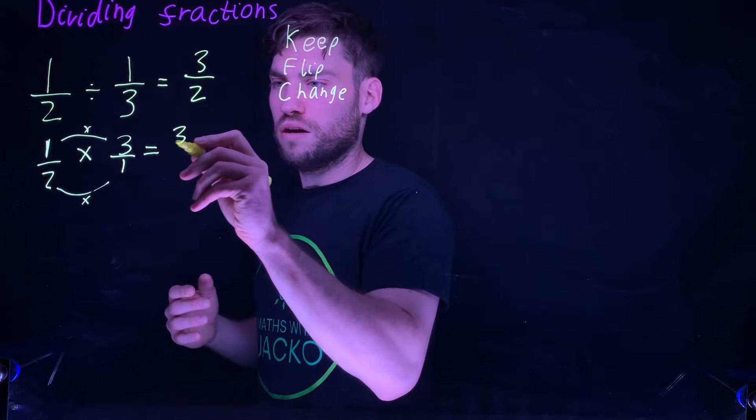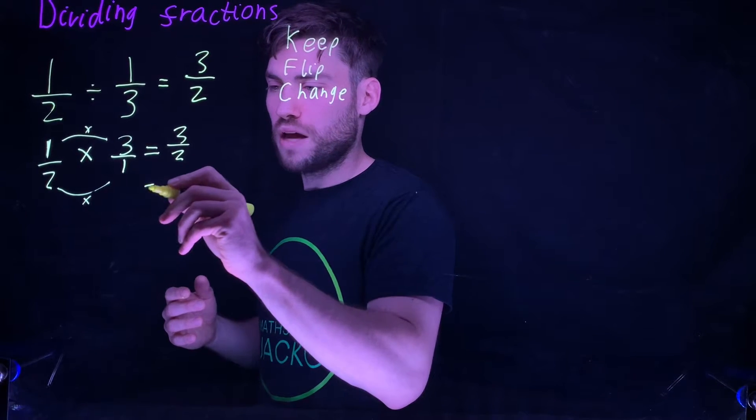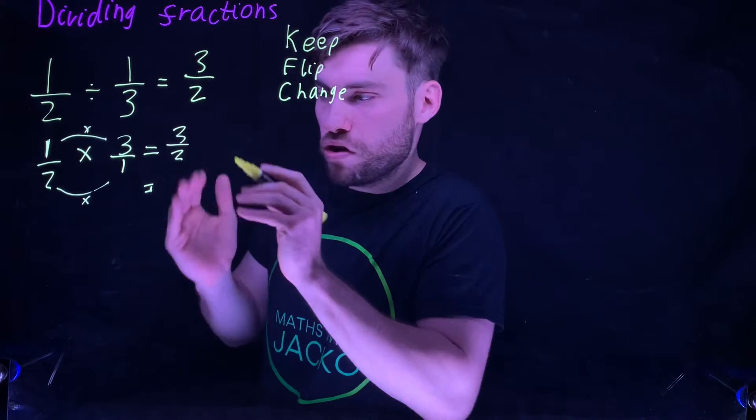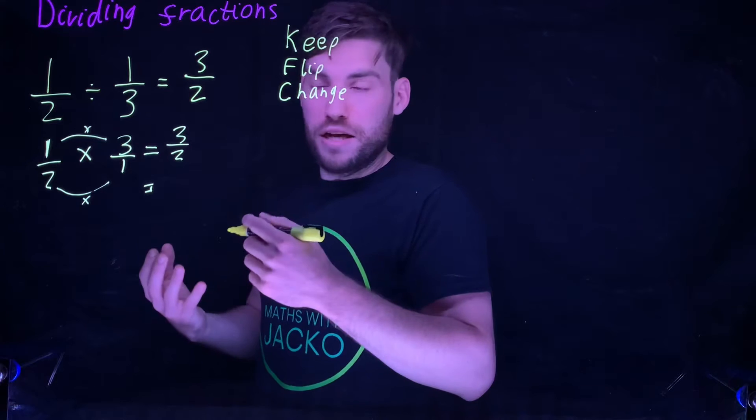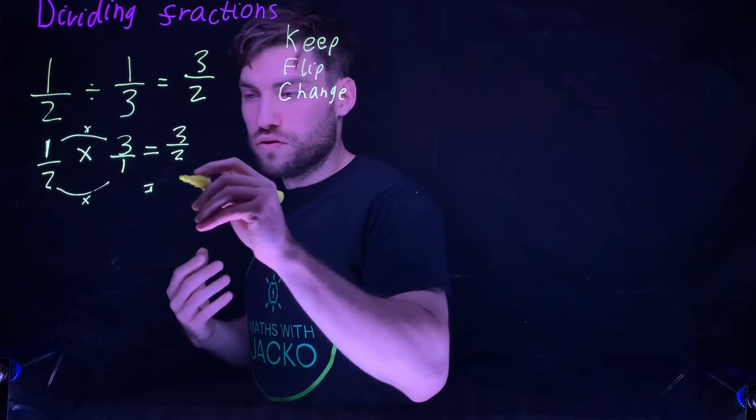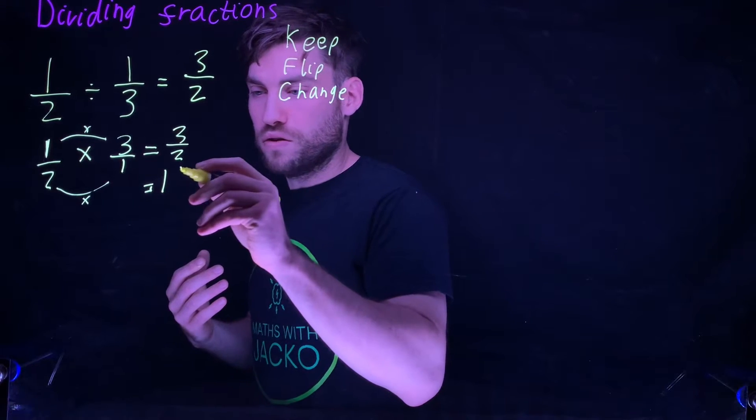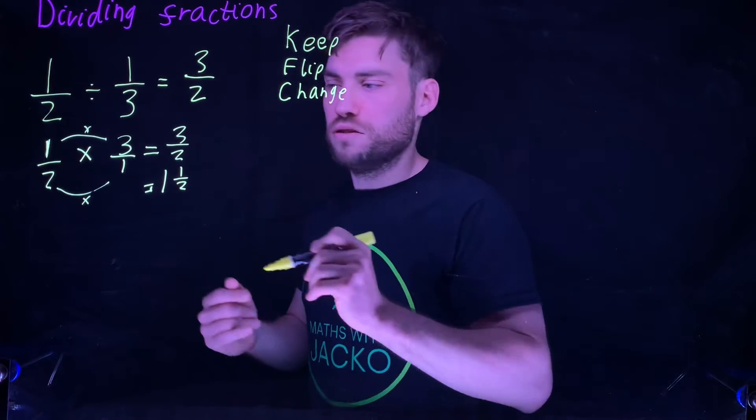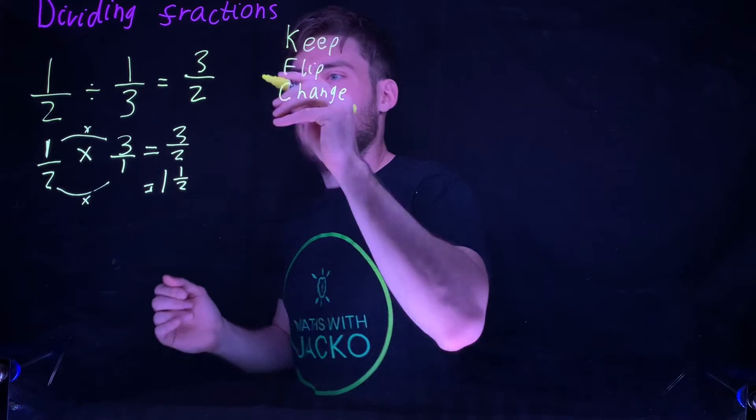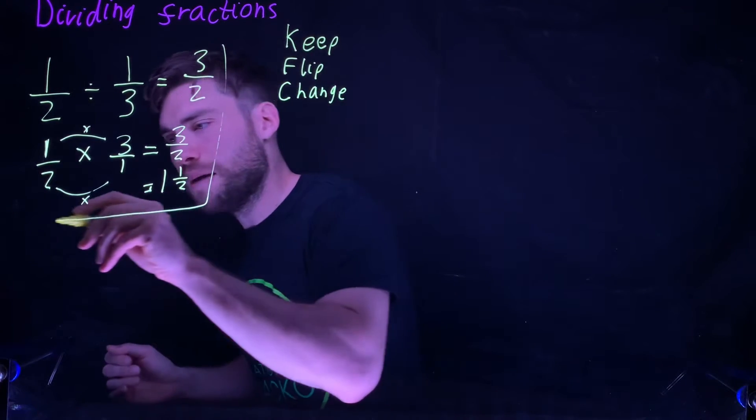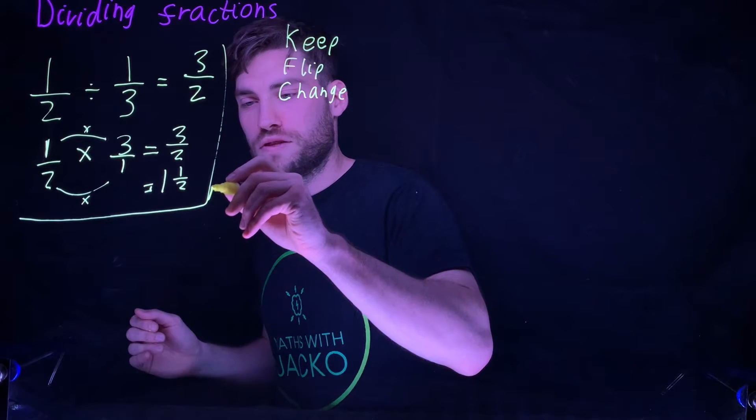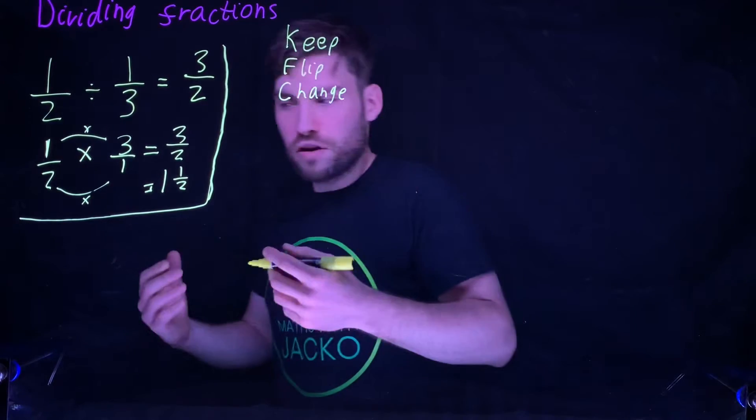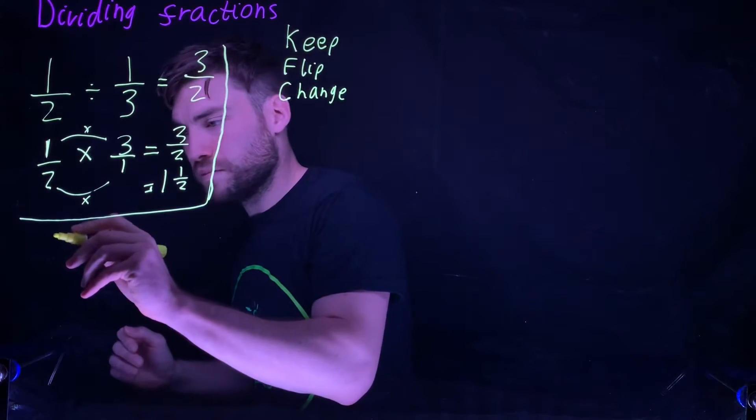You just multiply the numerators, multiply the denominators. So one times three, two times one, and that's where the answer three over two comes from. You might have caught this on as well - why don't you try turn that to a mixed number? How many twos are into three? One, and then there's one half left over. I do a video on converting between improper fractions and mixed numbers where I go in more detail. There is an example using KFC. Have a go now at this one.